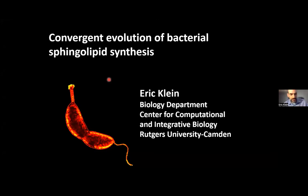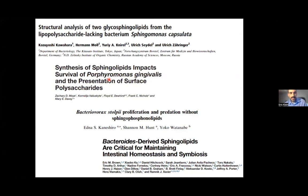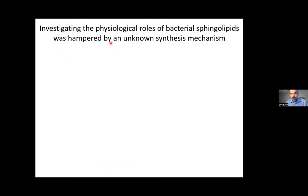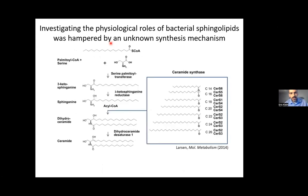My lab is really interested in microbial cell biology and microbial physiology, and as Dom pointed out there have been a number of papers over the last decade or so showing that sphingolipids play a really important role in host-microbial interactions for bacteria like Sphingomonas. The sphingolipids play an important role in giving structure to the outer membrane, and a major challenge is that we don't understand the full mechanism of sphingolipid synthesis in bacteria.